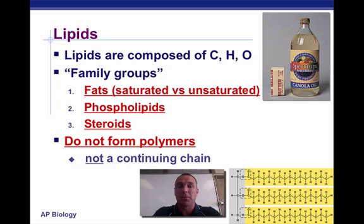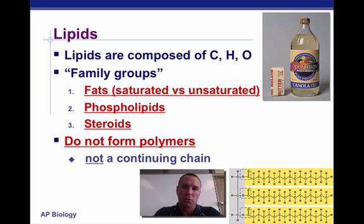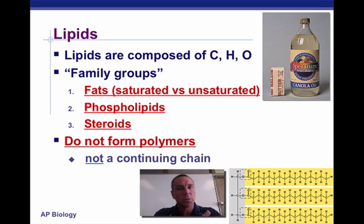Lipids are made up of three elements: carbon, hydrogen, and oxygen. They consist of three different family group members: fats, which can be either saturated or unsaturated; phospholipids; and steroids. We're going to talk about each one of these groups before we move on to the next organic molecule.